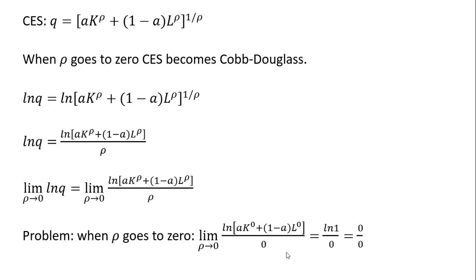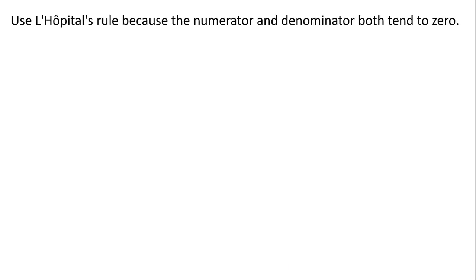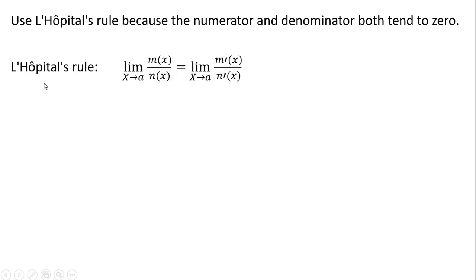We have a solution to this problem — we're going to use L'Hôpital's rule, because the numerator and denominator both tend to zero. L'Hôpital's rule states: if we have a function m(x) divided by n(x), and x goes to some value a, where both the numerator and denominator go to zero, we can take the derivative of the numerator, take the derivative of the denominator, and then evaluate it as x goes to a.